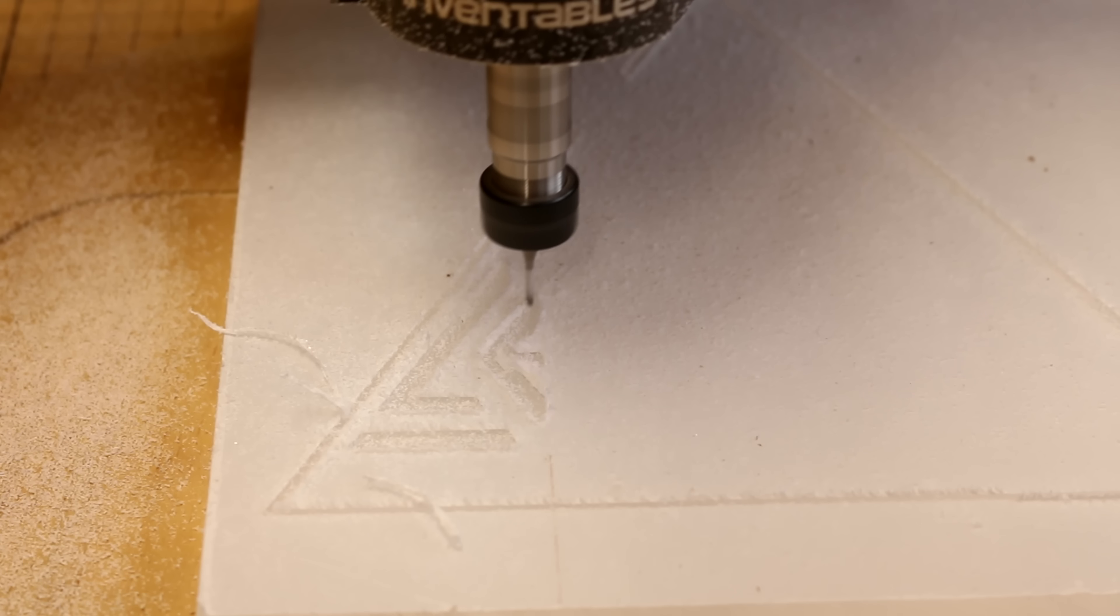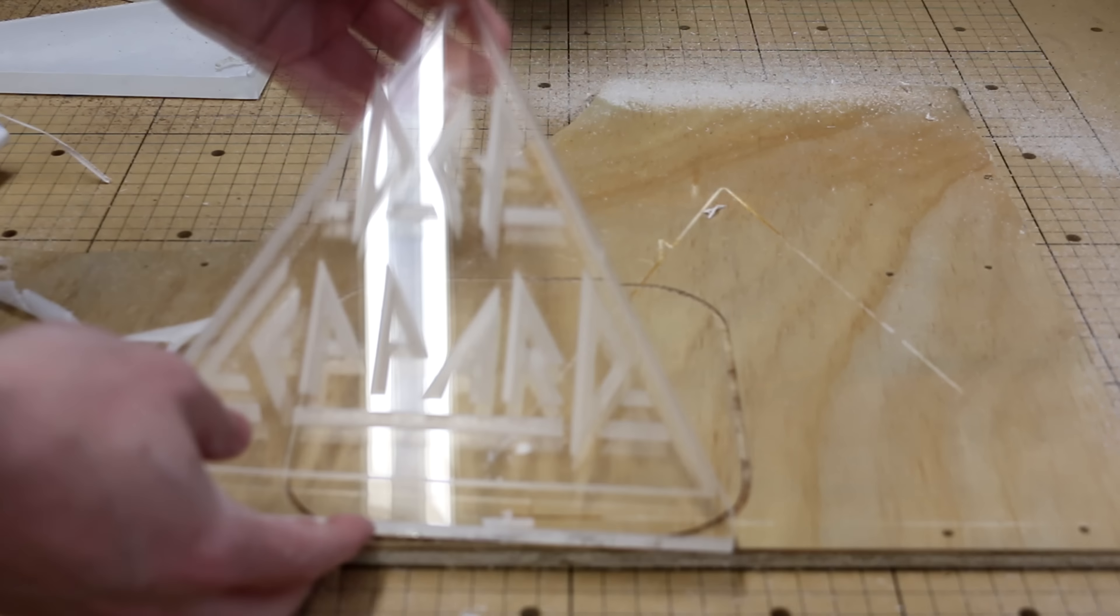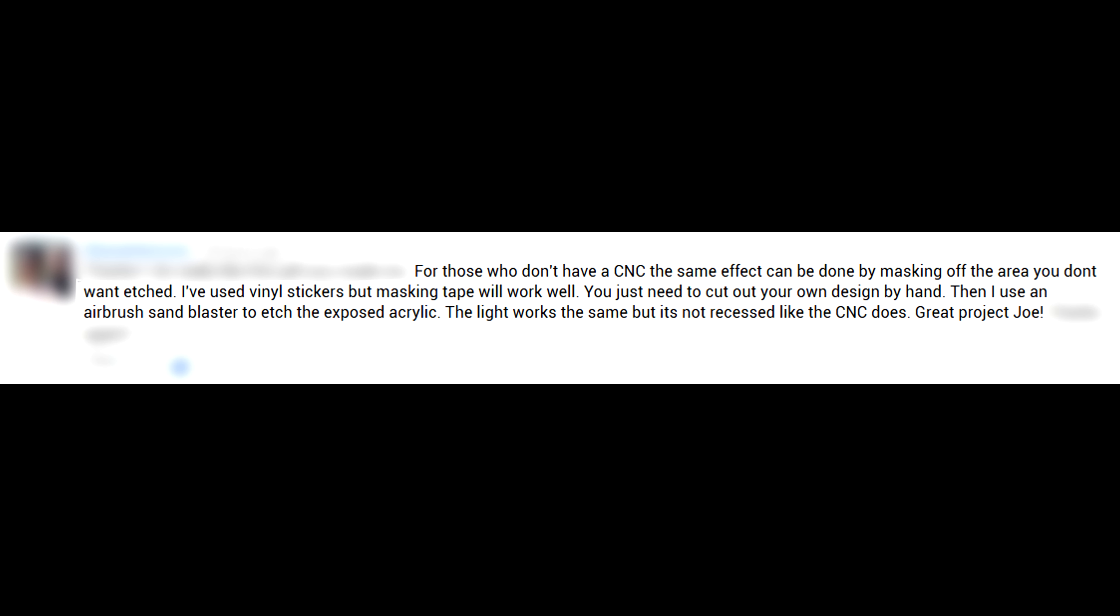In my last video I made a Def Leopard LED light. I used the X-Carve to create the Perspex logo design. In this video I want to discuss a couple of different methods that could have been used instead of the CNC.